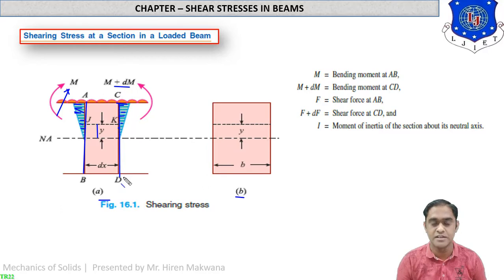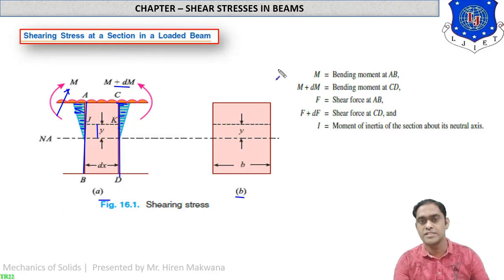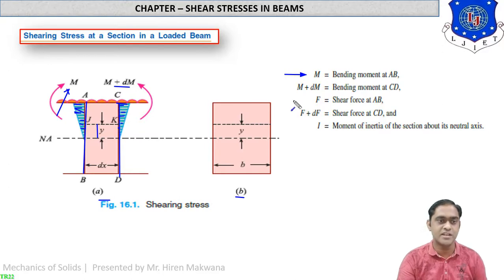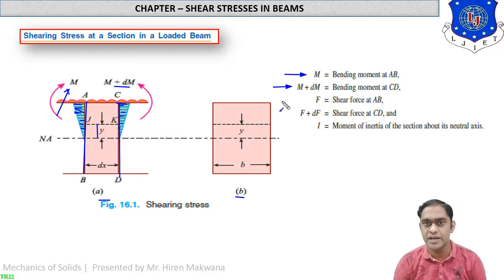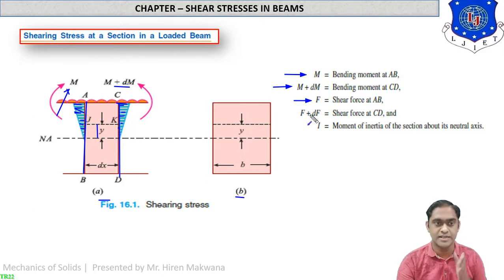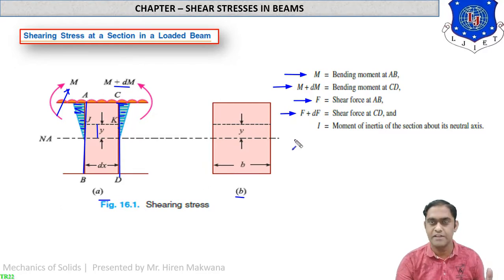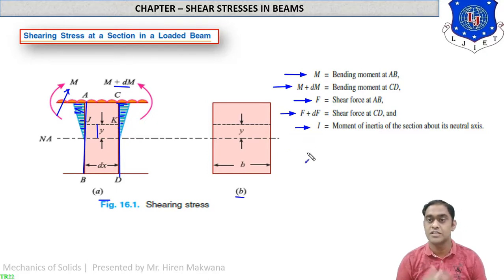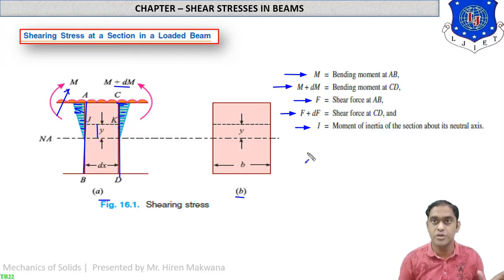Let us discuss the notations. M is the bending moment at section AB. M plus dM is the bending moment at section CD. F is the shear force at section AB. F plus dF is the shear force at section CD. I is the moment of inertia of the section about its neutral axis.